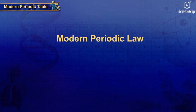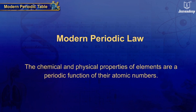Accordingly, Mendeleev's Periodic Law was modified into Modern Periodic Law and it can be stated as: the chemical and physical properties of elements are a periodic function of their atomic numbers.